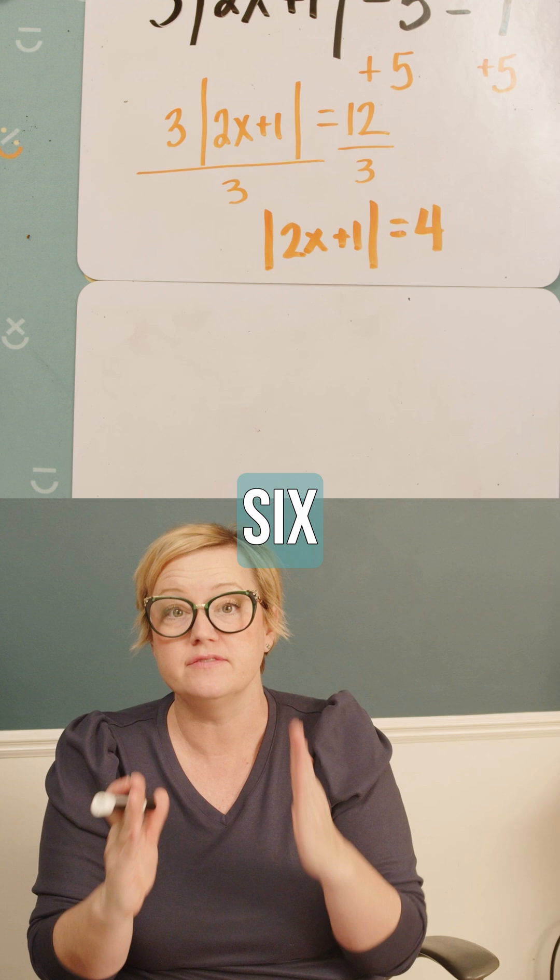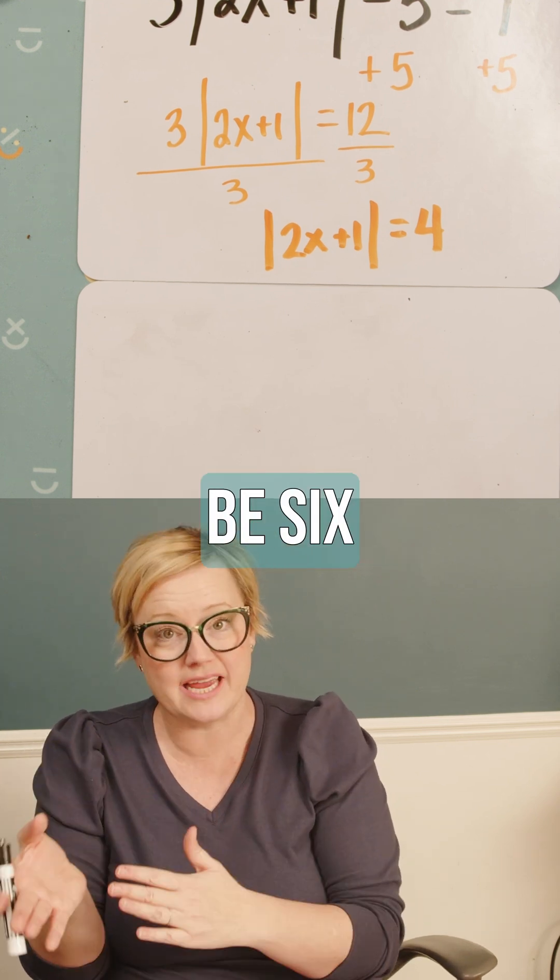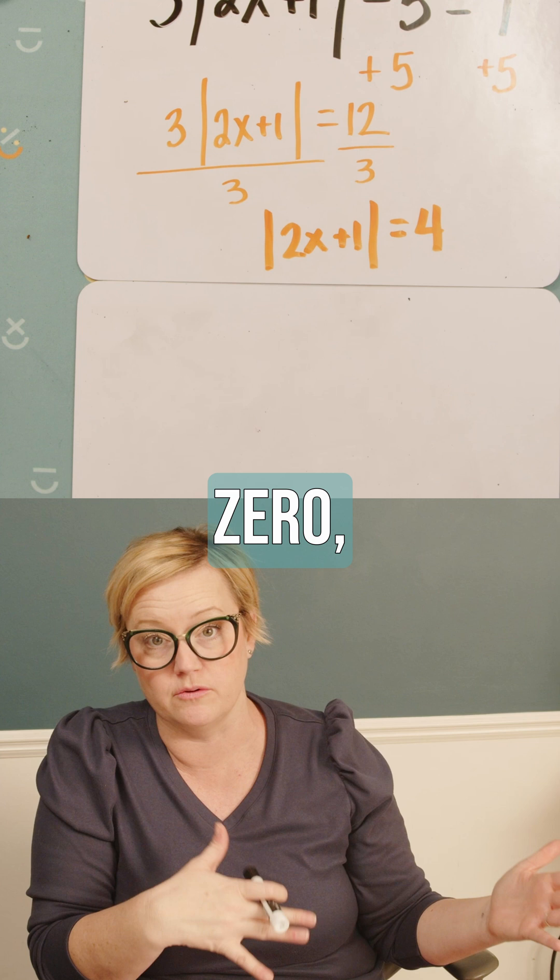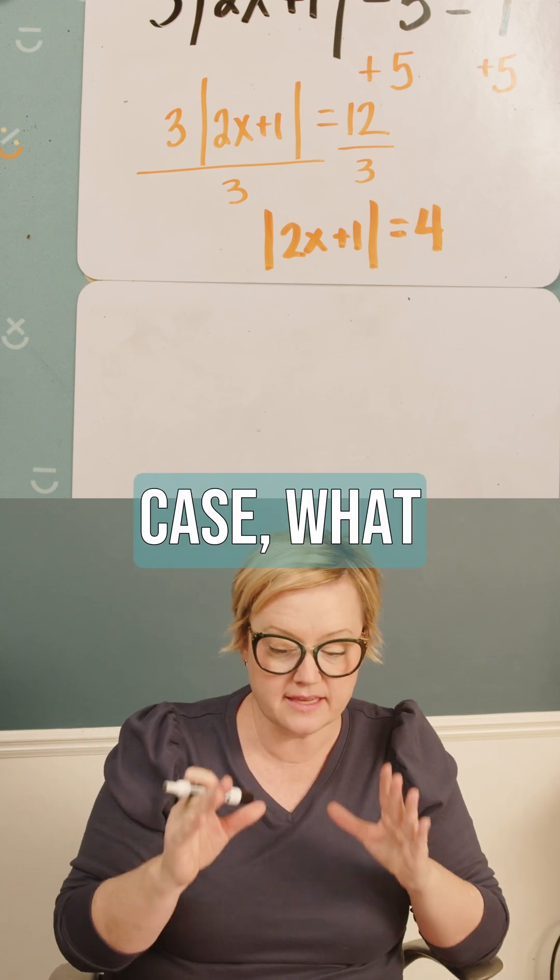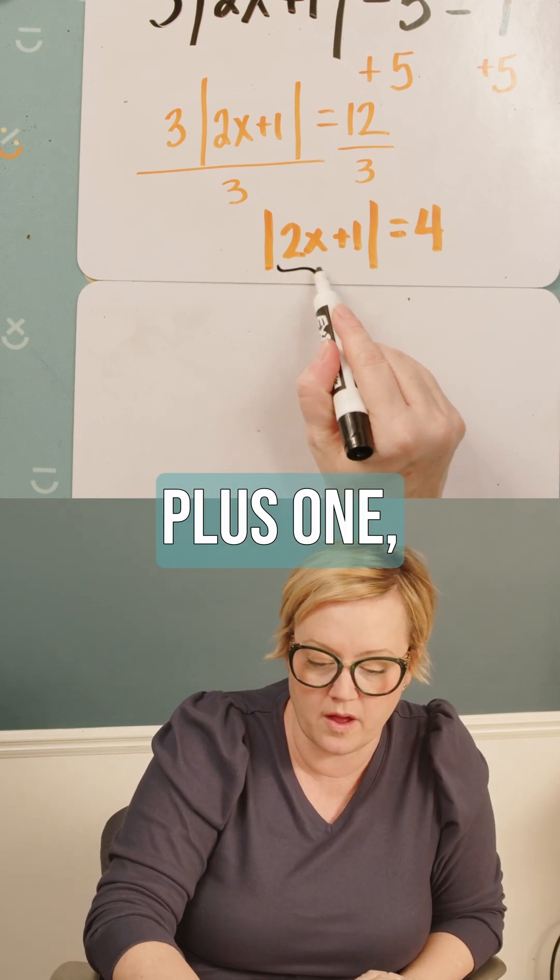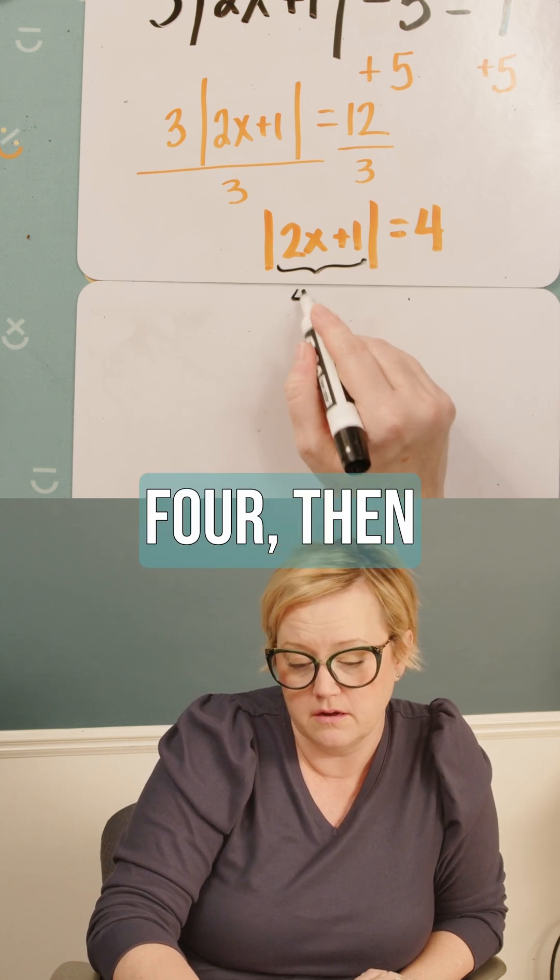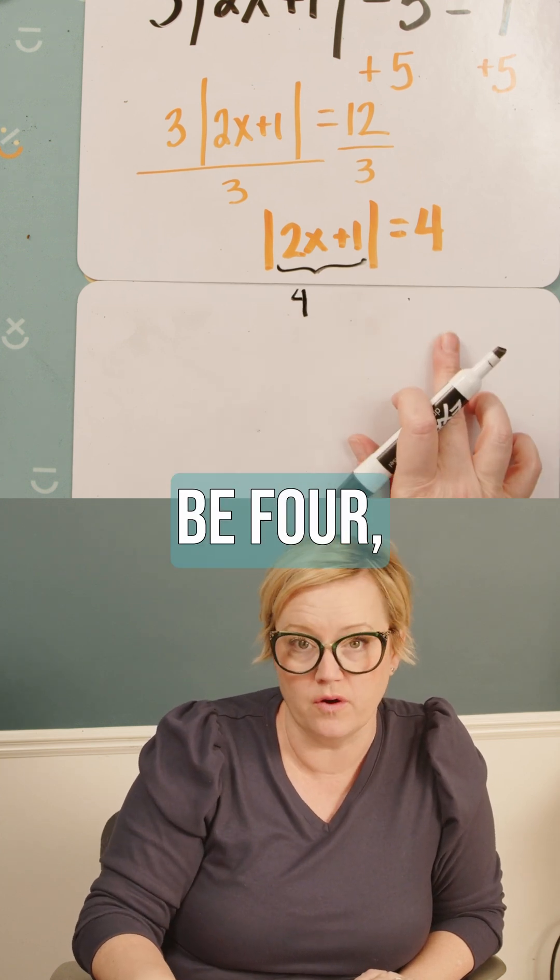So like the absolute value of negative six means that it is gonna be six because it's six spots away from the zero. So in this case, what that means is that this 2x+1, if it equals four, then the absolute value would be four, right?